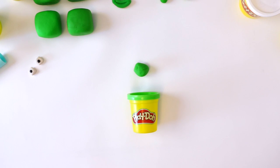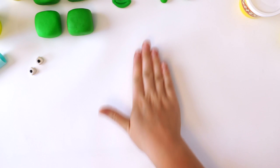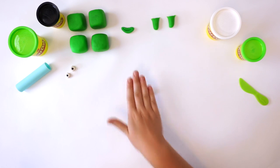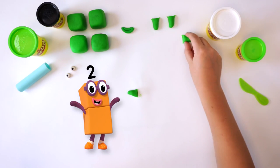Now for the arms. To make the arms, just repeat what you did for the legs. Roll your Play-Doh into a snake and cut in half. Two arms. One, two.